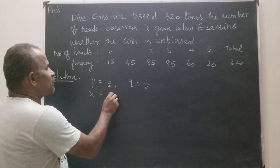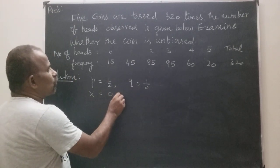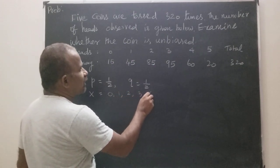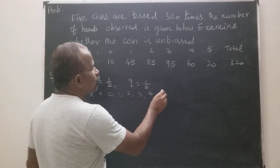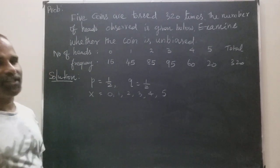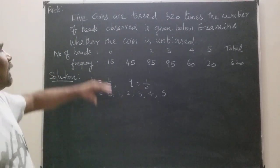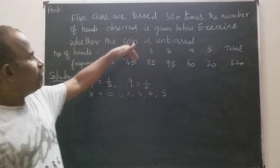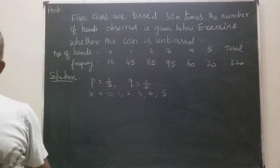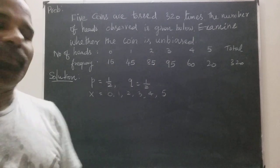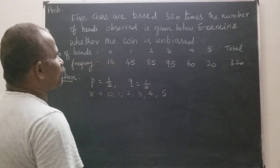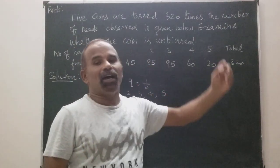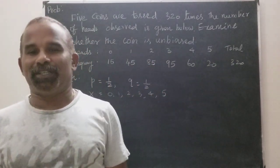So x takes the values 0, 1, 2, 3, 4, and 5 number of heads. In this problem, the observed frequencies are given: 15, 45, 85, and so on.